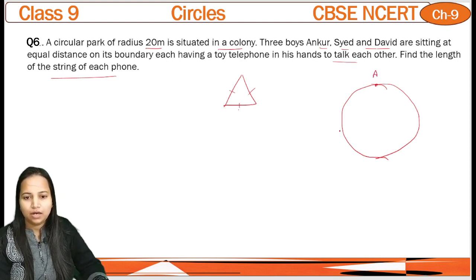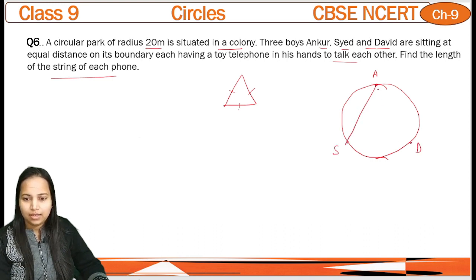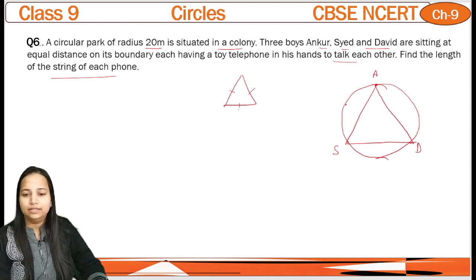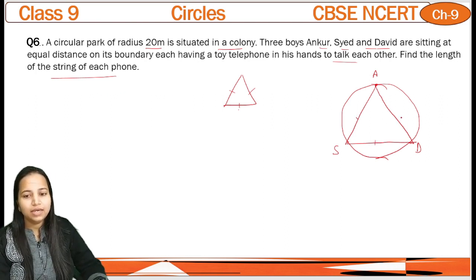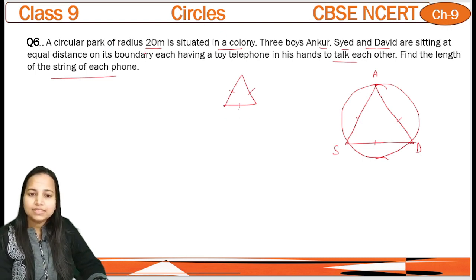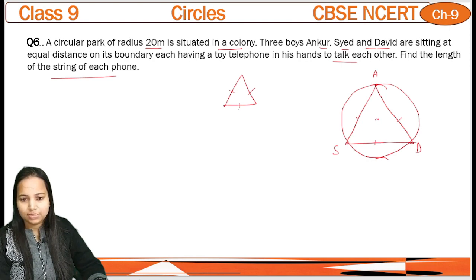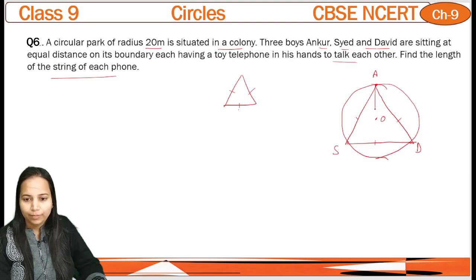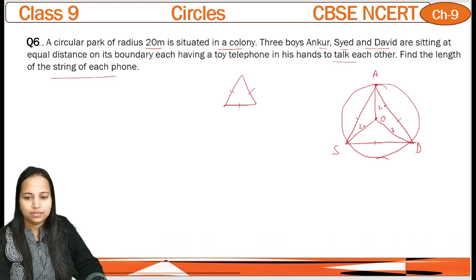Yahan hum draw kar lete hain — Ankur as A, S for Sayyad, and D for David. So this is an equilateral triangle. Ab humein pata karna hai length kya hai — yahan se string ka, ya phir yeh jo distance hai, AS ya SD ya AD, kitna distance hai? Yahan given hai radius kitna given hai? 20 meter. To yeh center hai, iska O. To agar hum yahan se isko meet karte hain — this one, this one — to yeh ho gaya radius: this is 20, this is 20, and this is also 20.